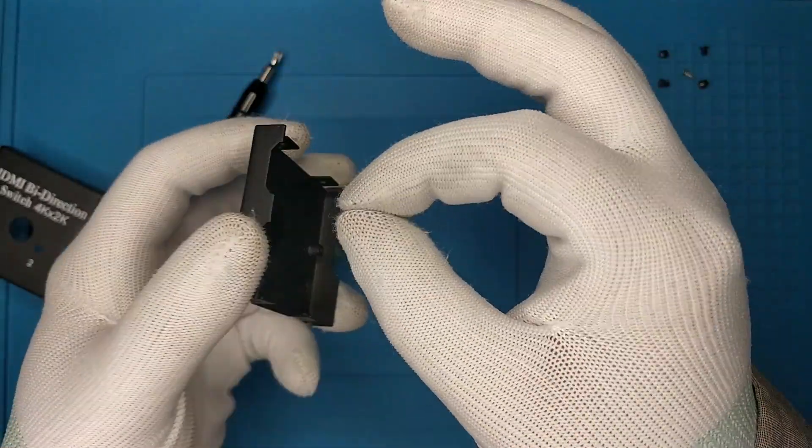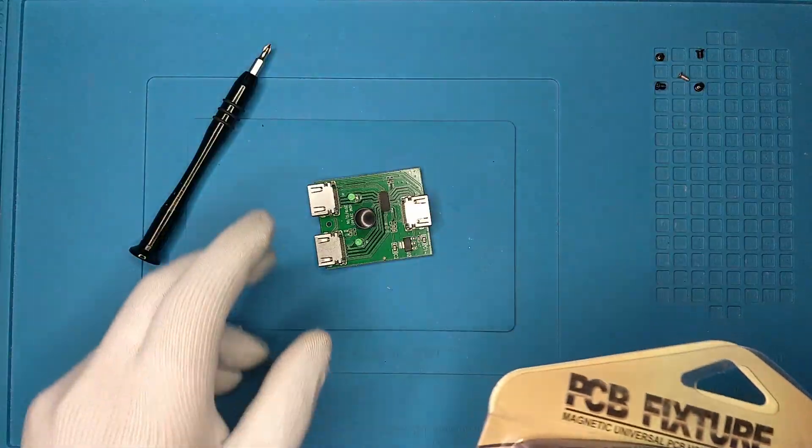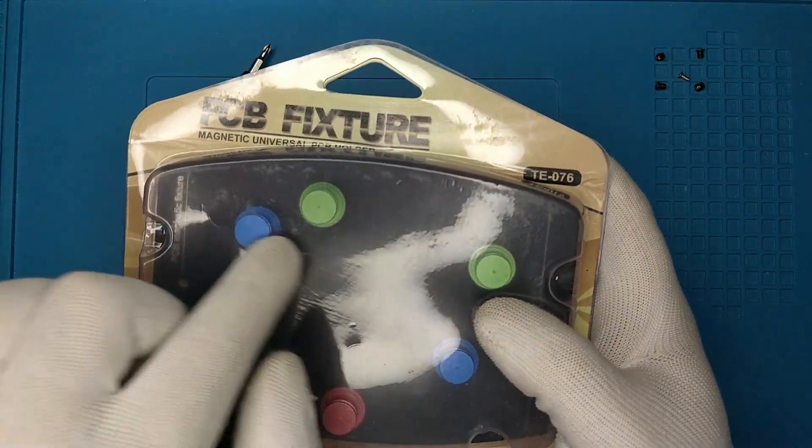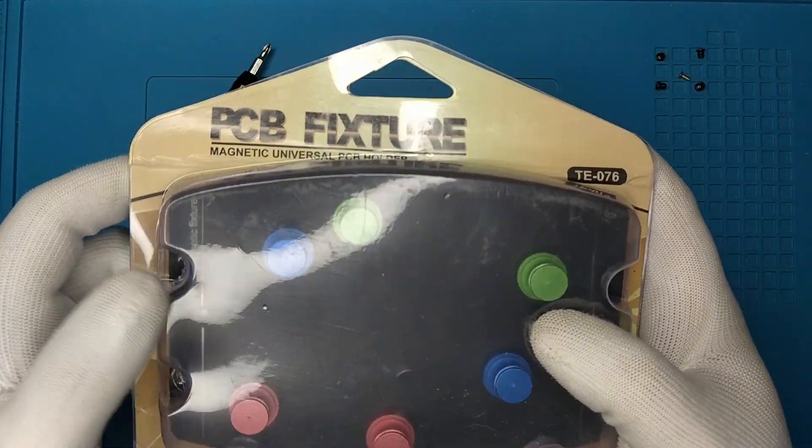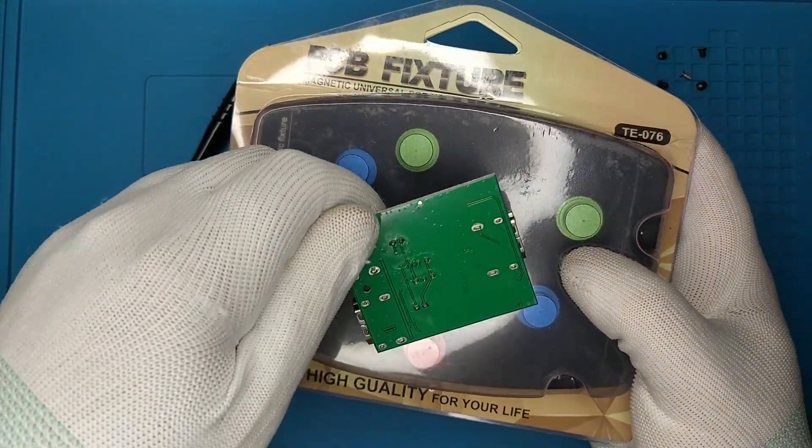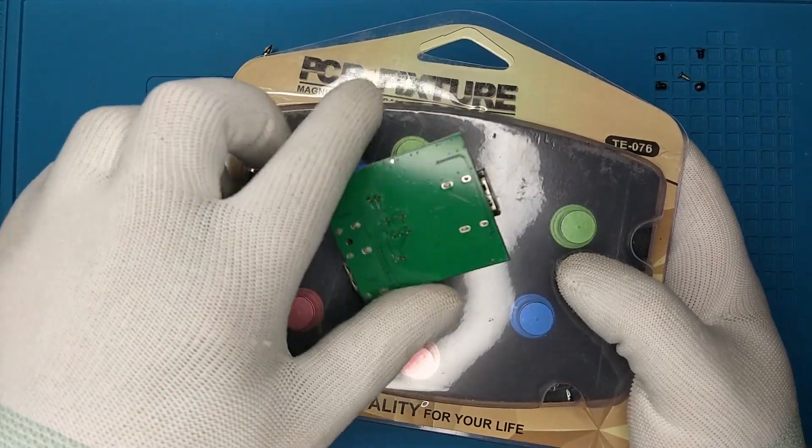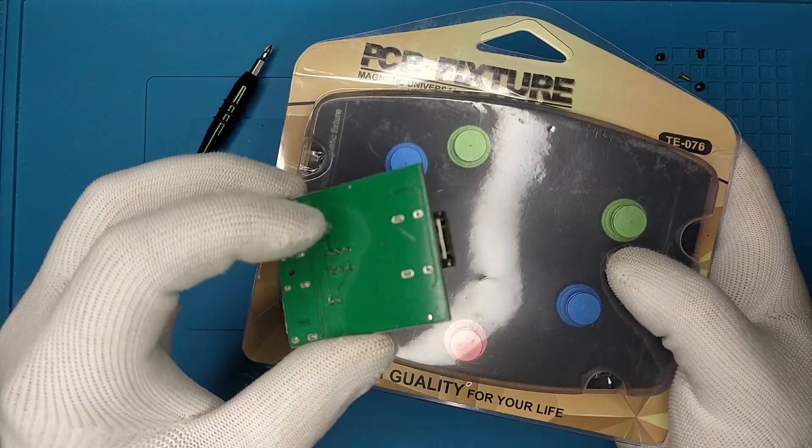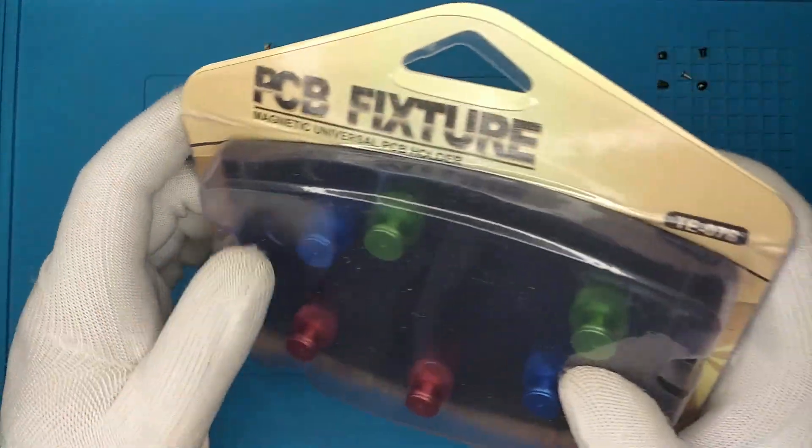To solder, I just bought this PCB fixture. These are magnets and this is just a metal plate. And you can put this on there in place, or like this, I guess. And you can desolder it without getting too close to your desk or anything else. So, we're going to try this one out as well.